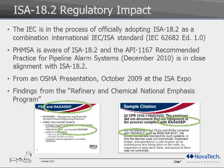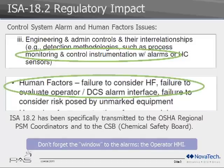There are examples of regulatory impact all across the industry. IEC is moving 18.2 toward a global standard. PHMSA is aggressively pursuing adoption of API 1167 in the pipeline industry. OSHA special emphasis findings cite RAGAGEP in citations, and Chemical Safety Board incident investigations specifically cite human factors around alarm systems and the DCS interface as absolutely critical.